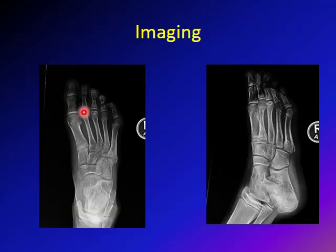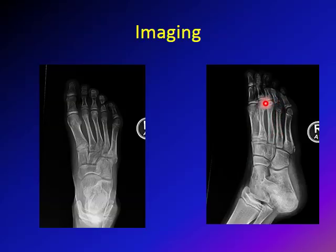Note that most cases of Freiberg infraction occur in the second metatarsal; however, some cases happen in the third, like this patient. This is an oblique picture of the same patient. You can see a normal-looking second metatarsal and normal-looking fourth metatarsal. In the third, you see flattening — it's not rounded like the second or fourth — and you see sclerosis. This confirms osteochondrosis or Freiberg infraction.